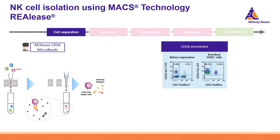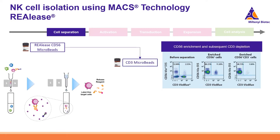Here is an example of the staining when using the REAlease CD56 microbeads. Before separation, you can see T cells and NK cells, and after CD56 enrichment you can clearly see the NKT and NK cell populations. When a second separation with CD3 microbeads is performed, you can nicely deplete the NKT cells.